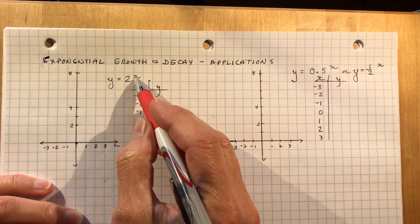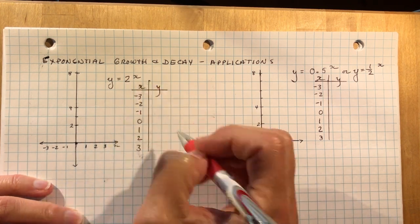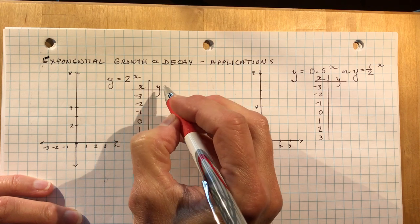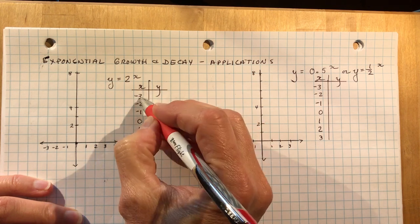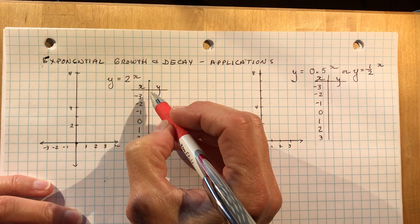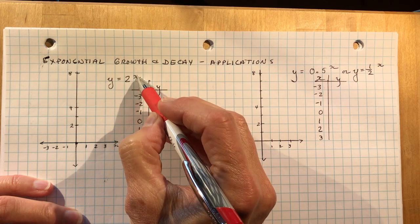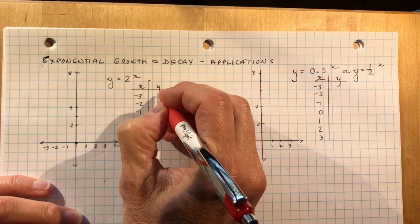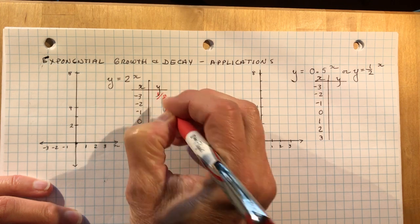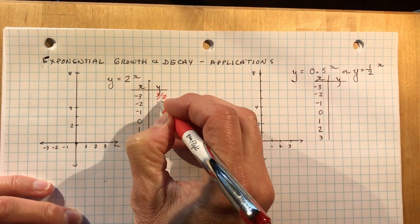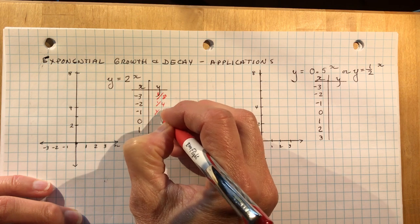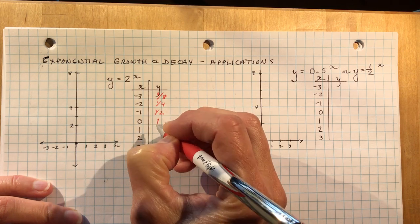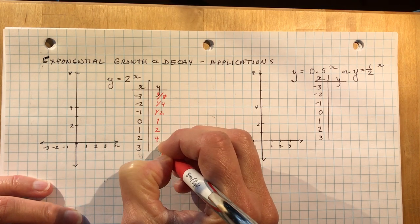So if we take a look at 2 to the x, we've already done this before. Don't forget when you raise something to a negative power, it does not make a negative number. 2 to the power of negative 3, which is 8, and the negative means I put 1 over my answer. So that's 1 eighth. 2 squared is 4, 1 over it, a quarter, a half. 2 to the 0 is 1, 2 to the 1 is 2, 4, 8.